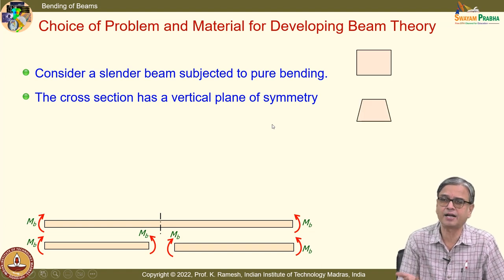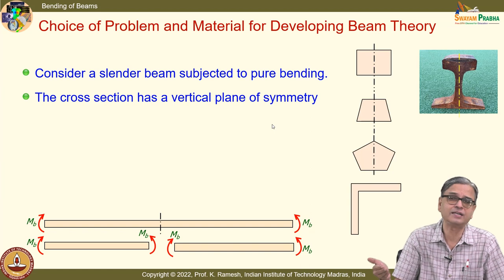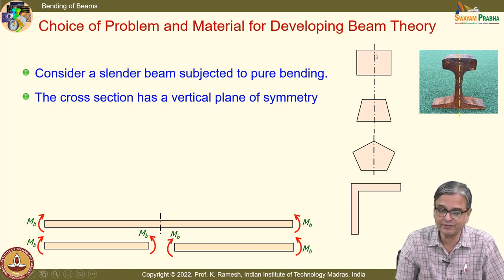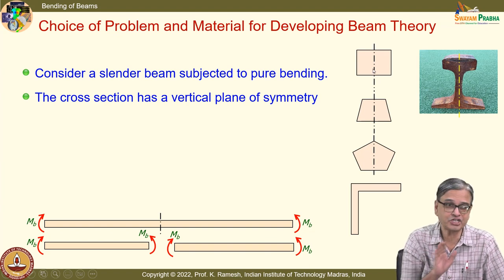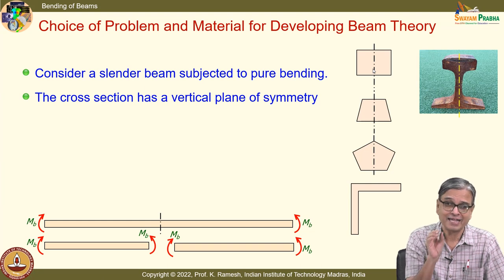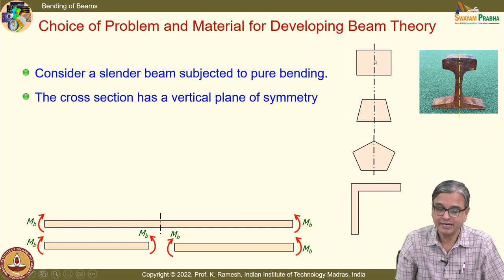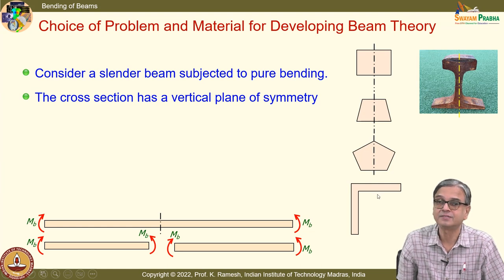Another very important aspect which many students ignore is that the solution is applicable for cross sections that have a vertical plane of symmetry, and I can have the loading applied in that plane. Usually we have a transverse load shown vertical, so it should have a vertical plane of symmetry. While developing the theory, we will confine attention only to the central plane. In the case of a shaft, we looked at a square shaft and a circular shaft — our strength of materials solution was valid only for the circular cross section. Here you have a little more relaxation: the beam theory is applicable for a variety of cross sections, but they should have a plane of symmetry.